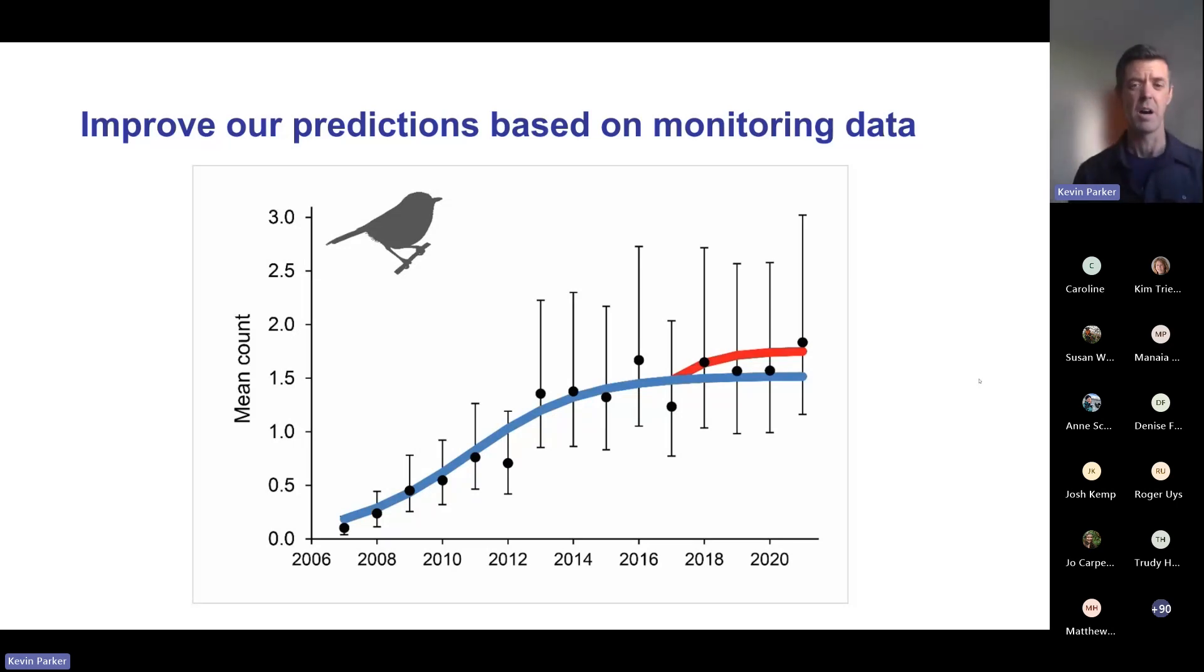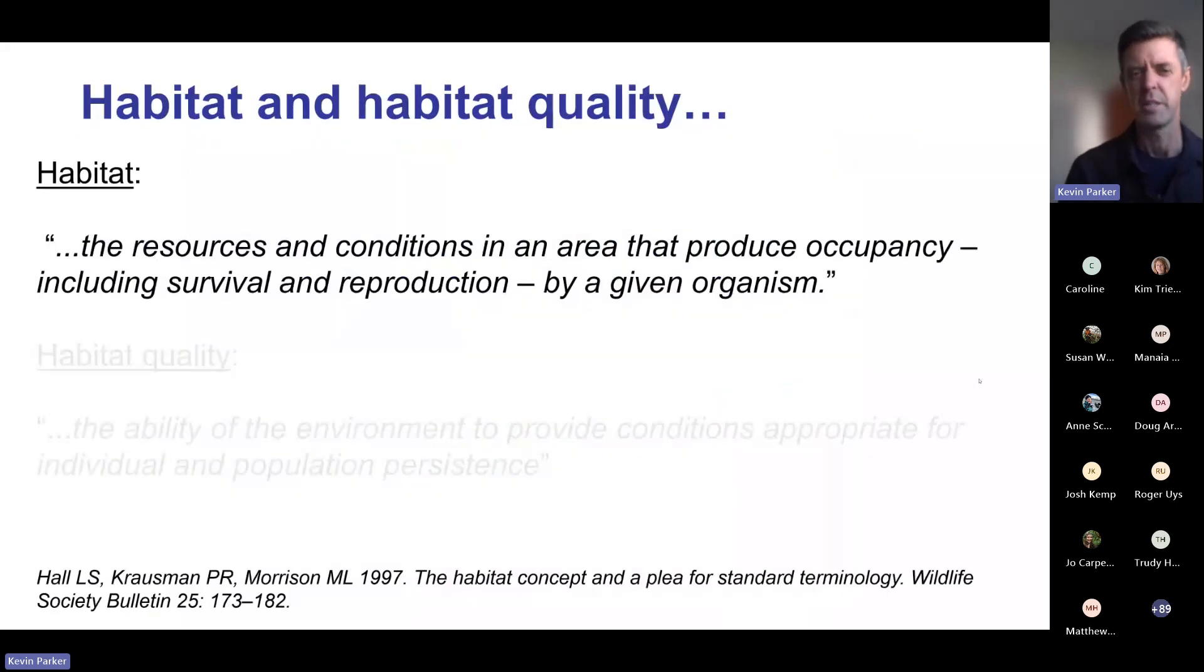What we really want is populations that increase and persist over time. If we think about how we get this curve, there's those variables I acknowledged before, but a more important variable in determining translocation success is actually habitat and habitat quality. We define habitat after Hall et al as the resources and conditions in an area that produce occupancy, including survival and reproduction by a given organism.